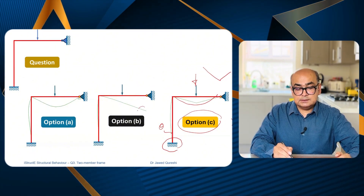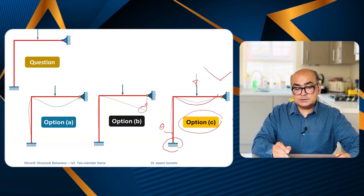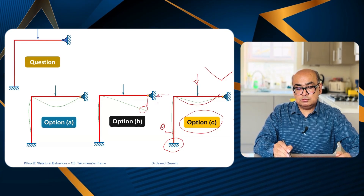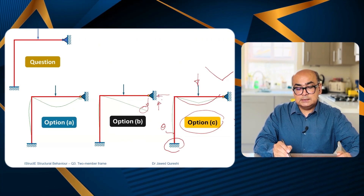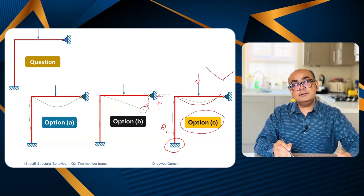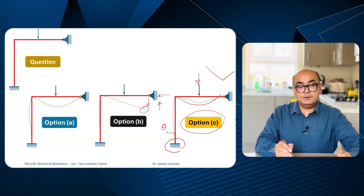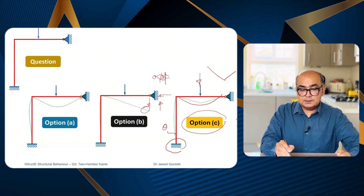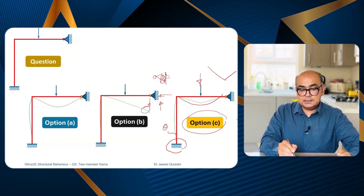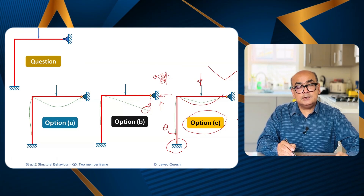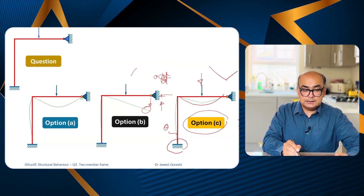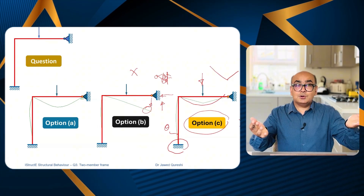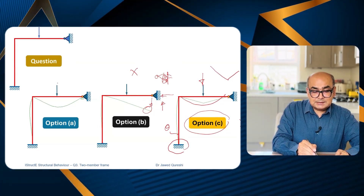In option B, the beam appears detached. The support on the right is a pin support — a pin support has two reactions, vertical and horizontal. The vertical reaction will prevent it from moving down. If it were a roller support, then yes, it could move down, but we don't have a roller here. That's why option B is wrong as well.